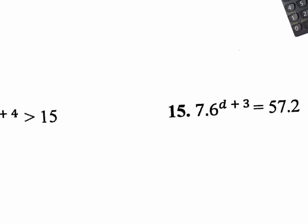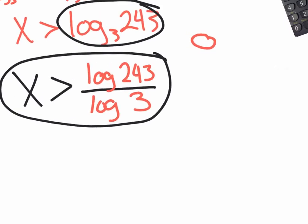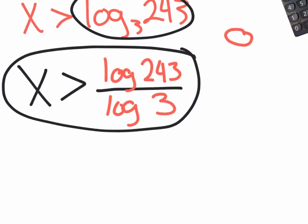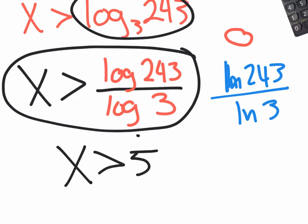Let's jump back to the one we just did. You didn't have to change it to common log — you could have changed it to ln if you wanted to. So you could have done ln of 243 over ln of 3, and it would still give you the correct answer. If you did ln of 243 over ln of 3, it would still give you the correct answer: 5. So your final answer on this one is x is greater than 5.